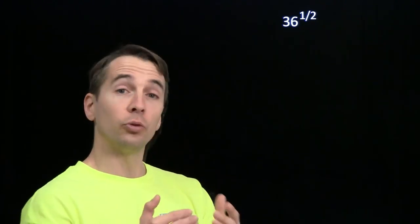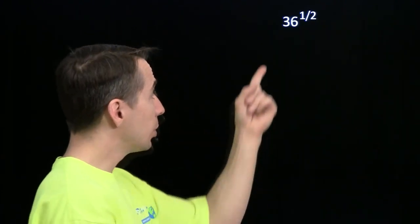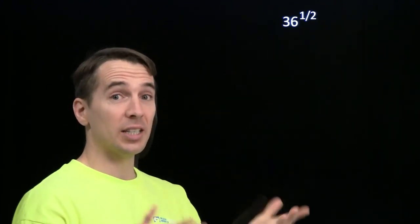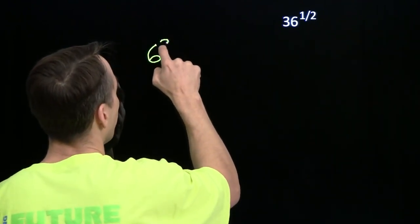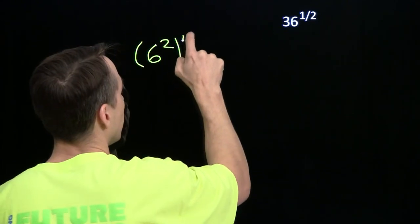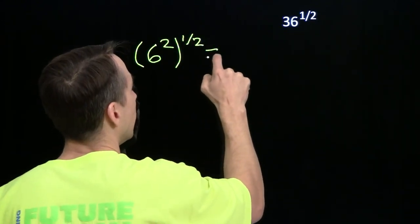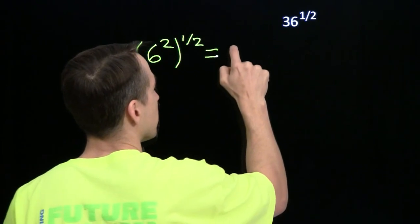Now, one of those rules was power of a power. We can use that here by writing 36 as 6 squared. So then we'll have a power of a power: 6 squared to the 1 half power. Now, our exponent rule tells us we multiply these exponents.